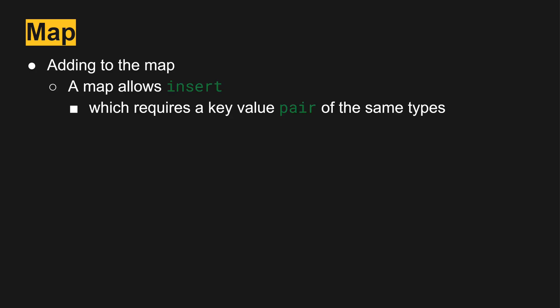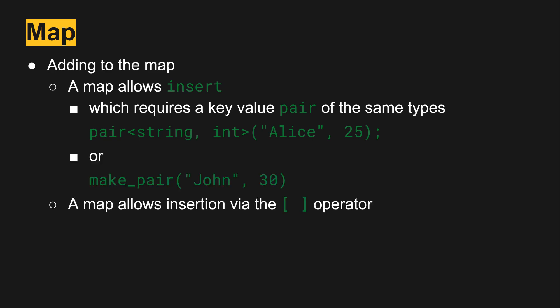If we want to add to the map, we can use the insert method, which requires a key-value pair — the same pair we talked about a few slides prior. So we create a pair string int with Alice and 25, or use make_pair. The map also allows insertion alternatively via map key equals value. So with make_pair we use it with insert, but without insert we can also do map key equals value.